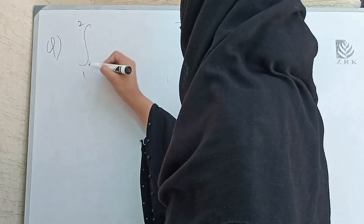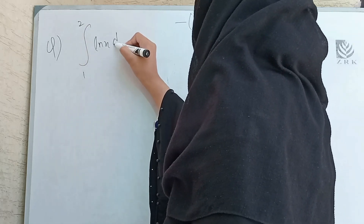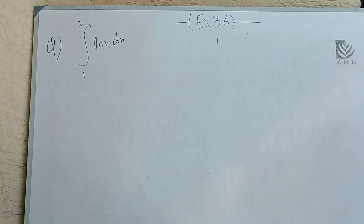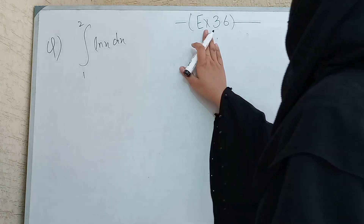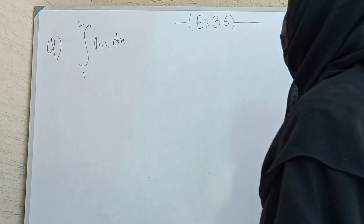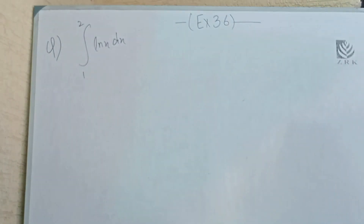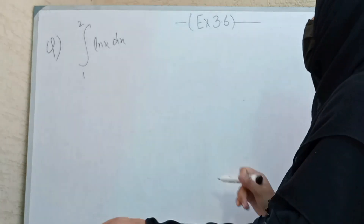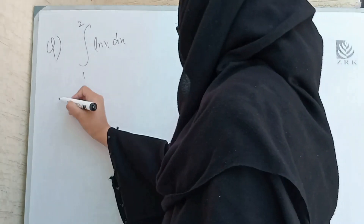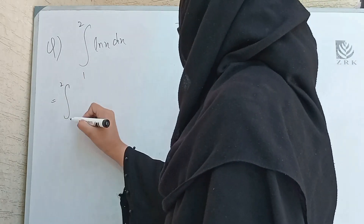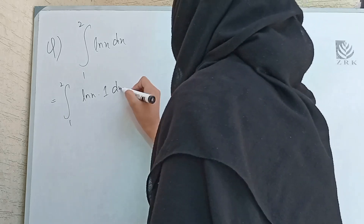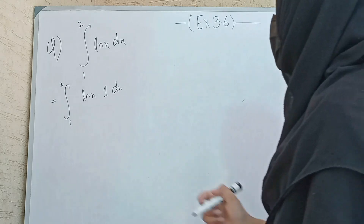The next part has the integral from 1 to 2 of ln(x) dx. In this case we have only ln(x) and the integration of ln(x) is not directly given, so we apply the integration by parts (product rule), writing it as ln(x) · 1 dx.